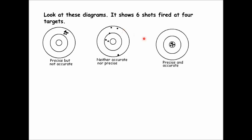In the third target, the shots are both precise and accurate. They're accurate because they hit the bullseye — the accepted value when talking about numbers — and they're precise because they're all close together. If your numbers are accurate and precise, the measurements must be close to each other and also close to the accepted value.